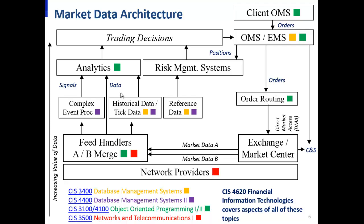At the lower levels, networks and telecommunications are key — all market data is transmitted over network providers. Understanding how TCP/IP protocol works, the difference between UDP and TCP, and the difference between point-to-point, multicast, or broadcast protocols is enormously beneficial for architecting, designing, or supporting network systems in financial IT.